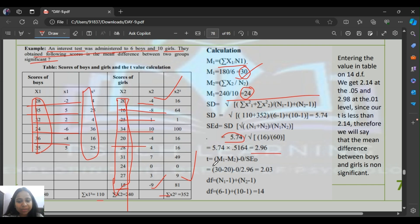Then we applied the formula: mean 1 minus mean 2 minus 0 divided by standard error of deviation. Then we calculated degrees of freedom. This is very important for NET, GATE or JRF exams. For independent samples, degrees of freedom is n1 minus 1 plus n2 minus 1. n1 was 6, so 6 minus 1. n2 was 10, so 10 minus 1. We get 5 plus 9 equals 14. This gives us our final answer.